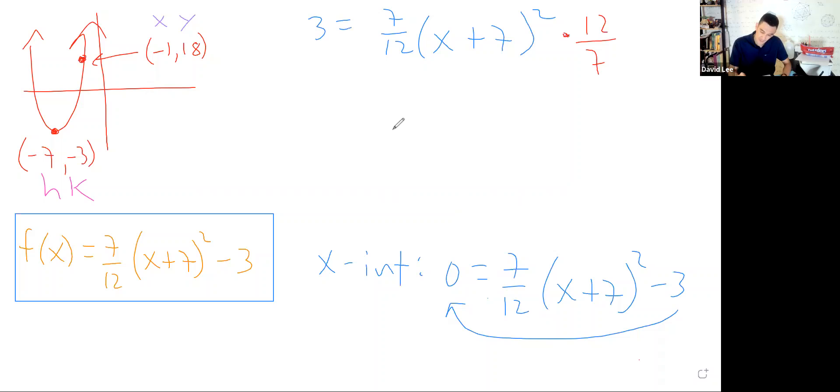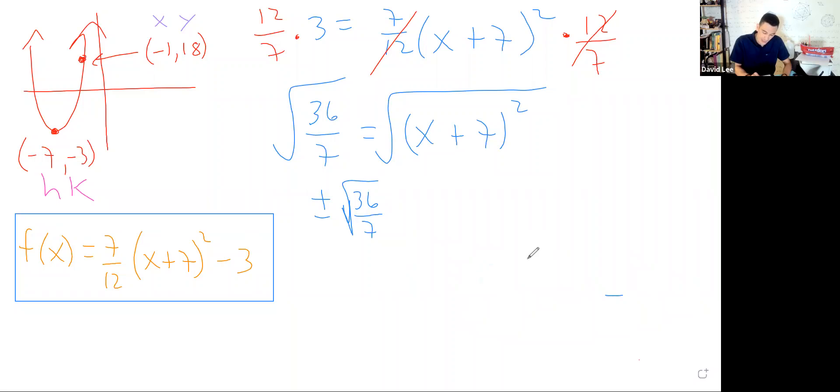Now we can get rid of this fraction by multiplying both sides by its reciprocal, 12/7. These knock out, and on the left we have 36/7 = (x + 7)². Then we can square root both sides. We get plus or minus the square root of that fraction, and on the other side we have x + 7. Subtract 7 from both sides.